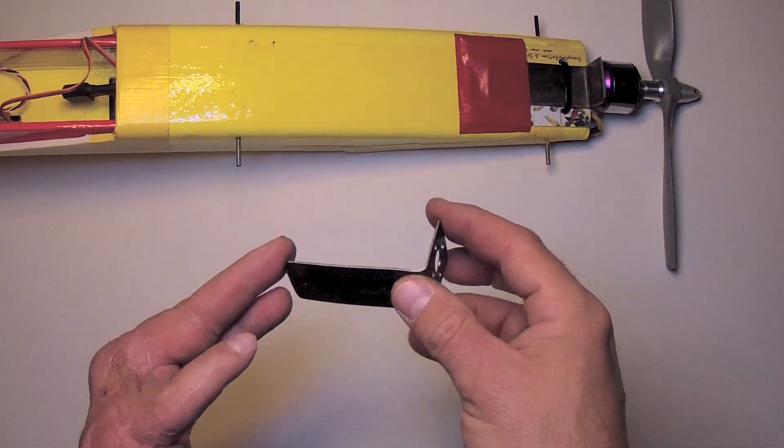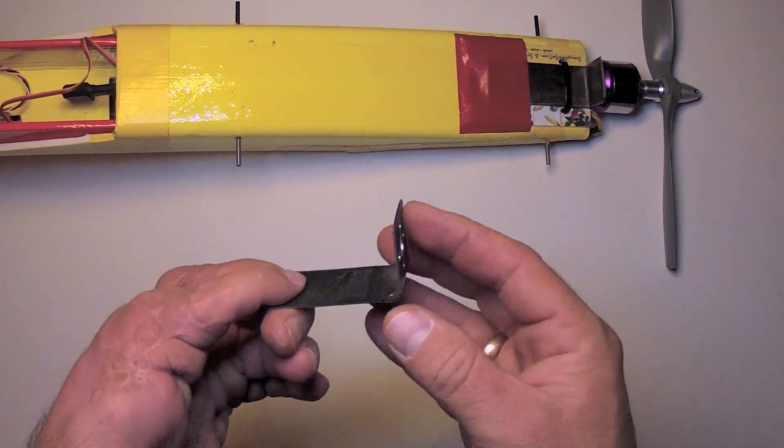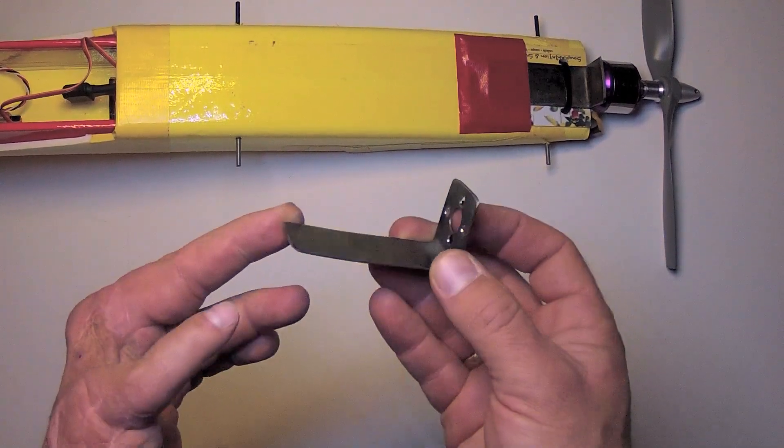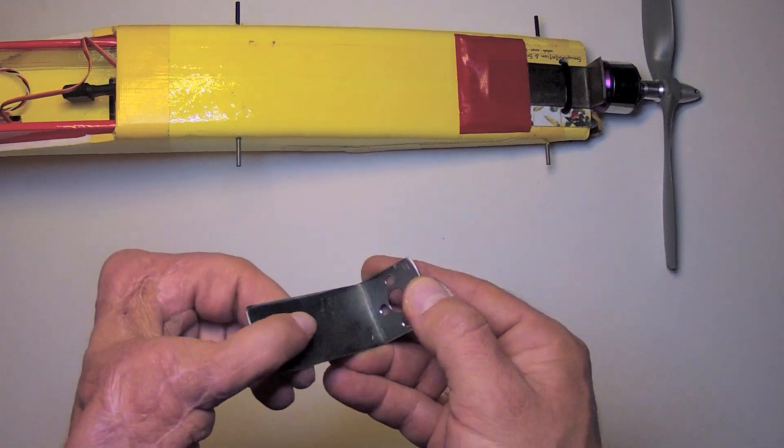For all of my planes, I prefer some variation of this L-shaped motor mount. This was made out of scrap titanium, but thin steel or aluminum will work just fine.